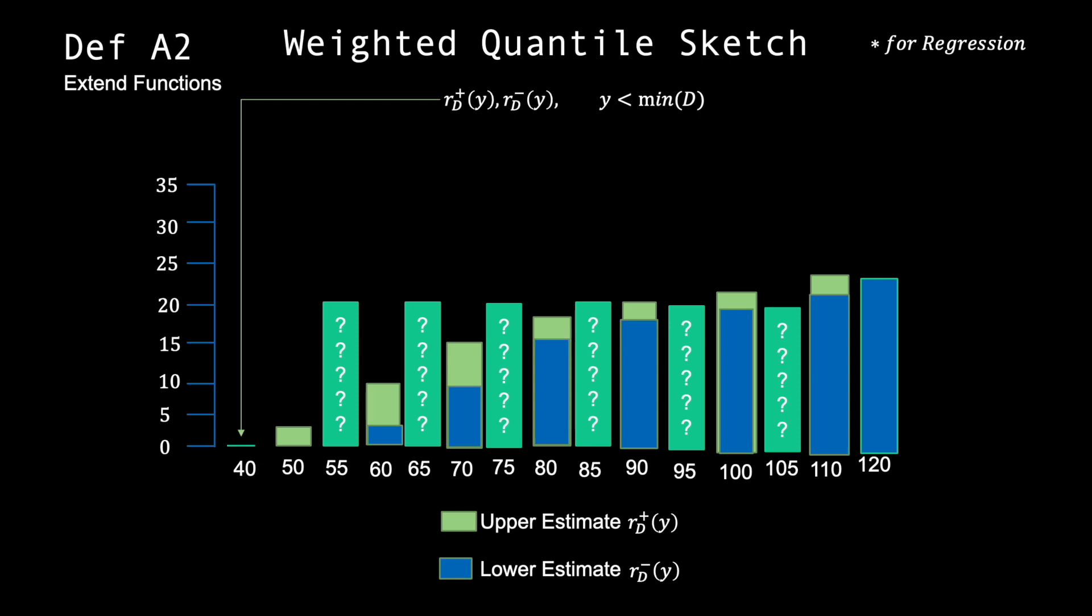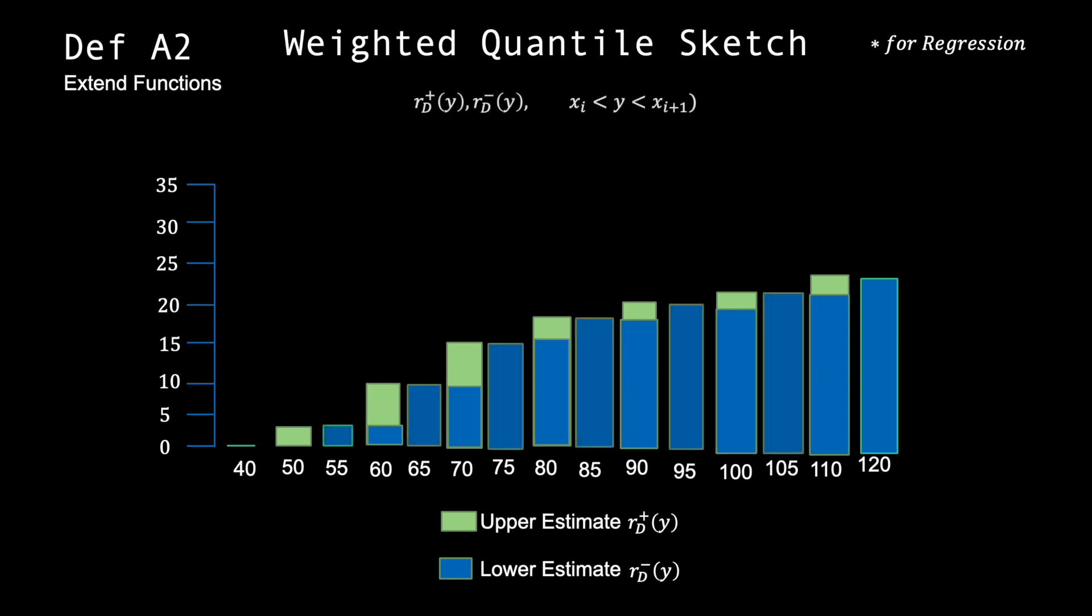If it is between two points in D, the ranks and weights of the points it is between are combined to estimate the rank of itself.